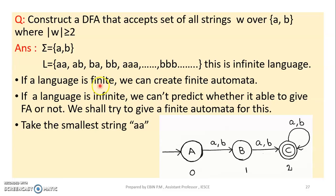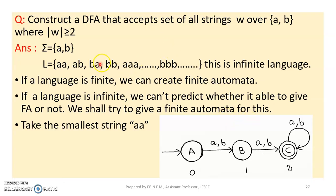Now, if we have an infinite language, we must create a finite automata. But if we have an infinite automata, we can't directly predict a finite automata. So let's try to construct a finite automata. We can take a small string, suppose a, a.